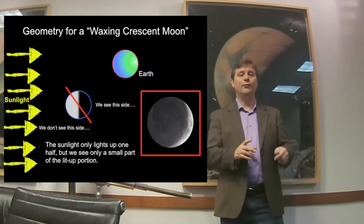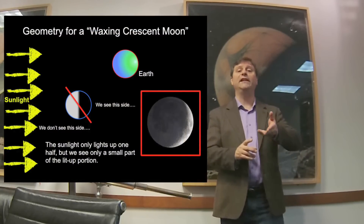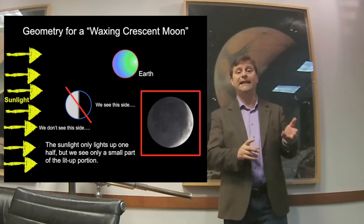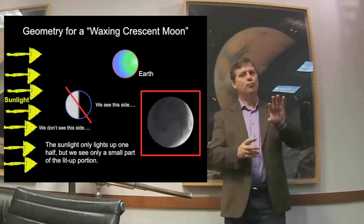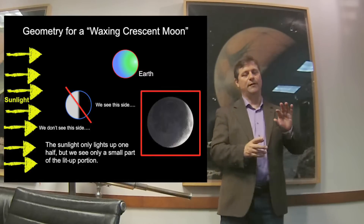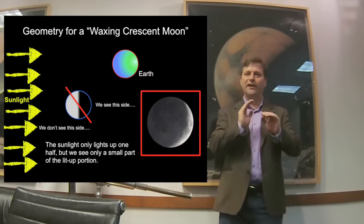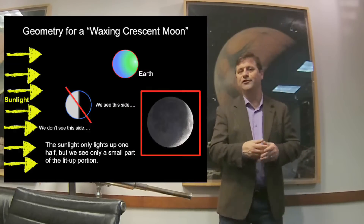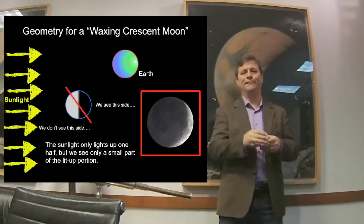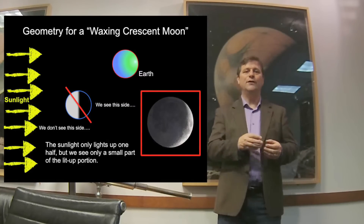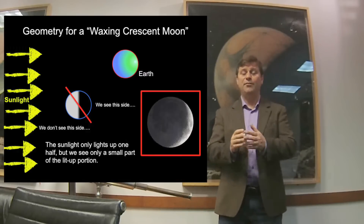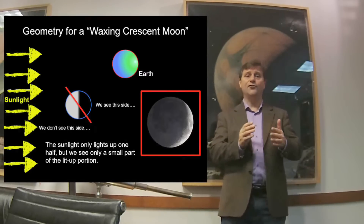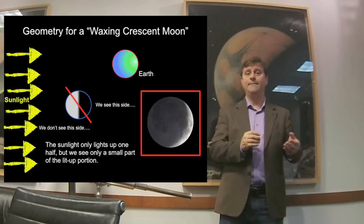A waxing crescent Moon rises just after sunrise, and then it sets just after sunset. So a waxing crescent Moon is only visible in the early evening, just after sunset. It looks like a croissant, or a crescent — which is where that word in French gets its name. The crescent Moon then appears to get larger and larger with time over the course of days.